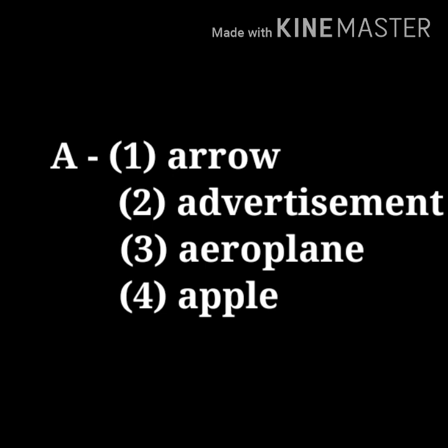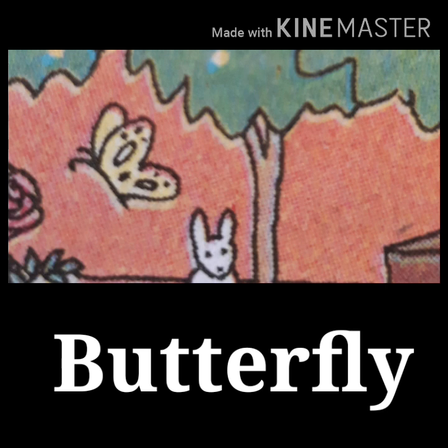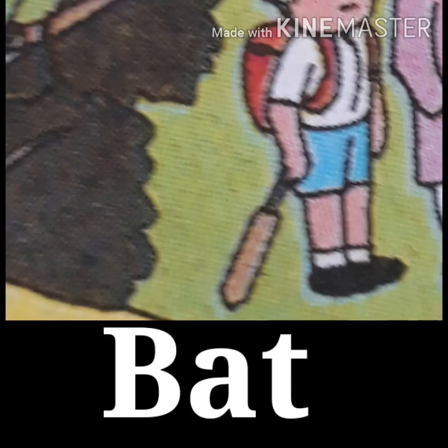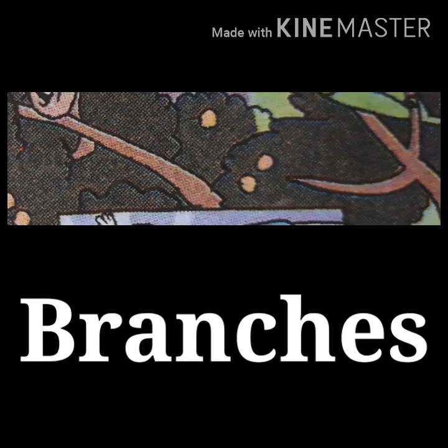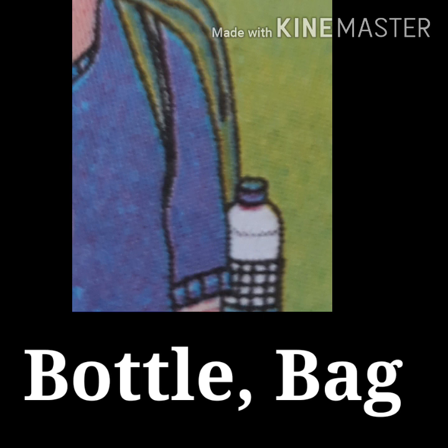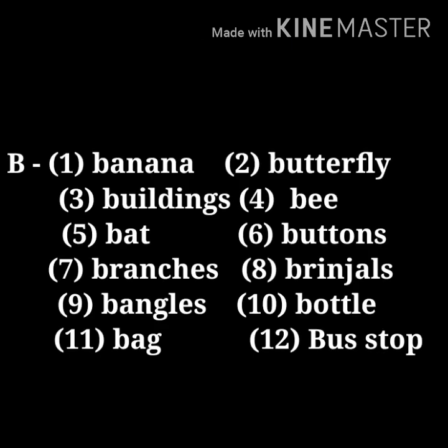Coming to our next alphabet, B: banana, butterfly, buildings, bee, bat, buttons, branches, brinjals, bangles, bottle, bag, bus stop. Write these words in your notebook.